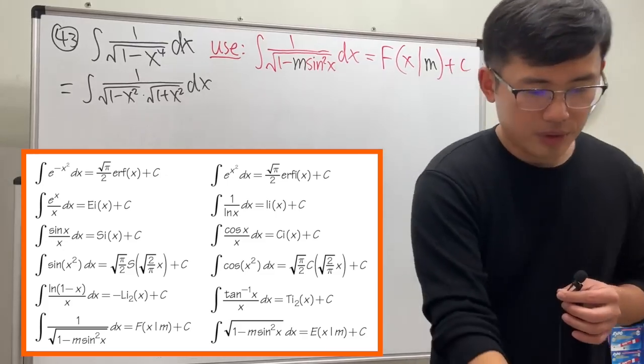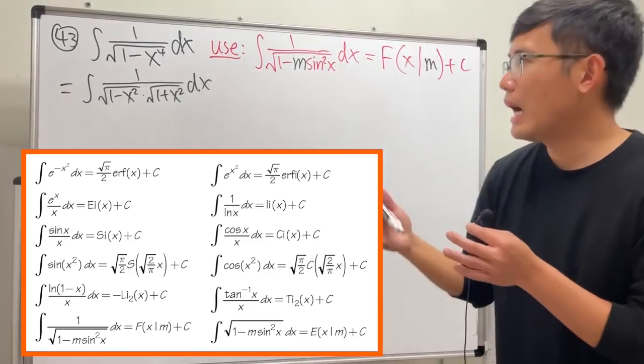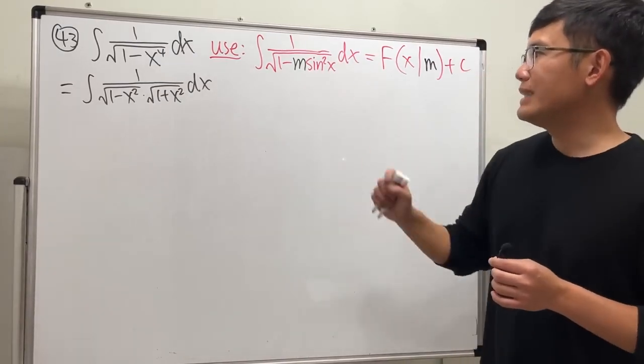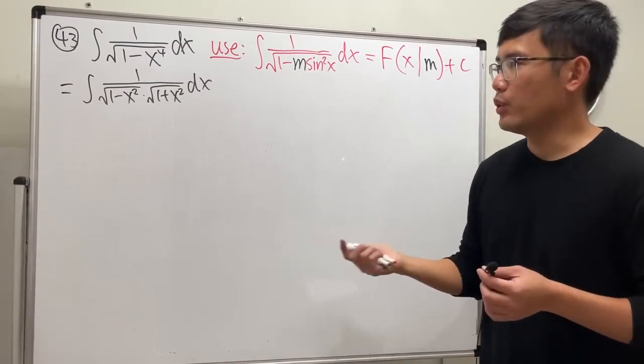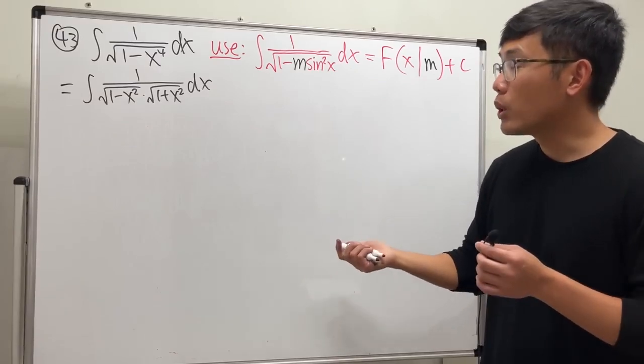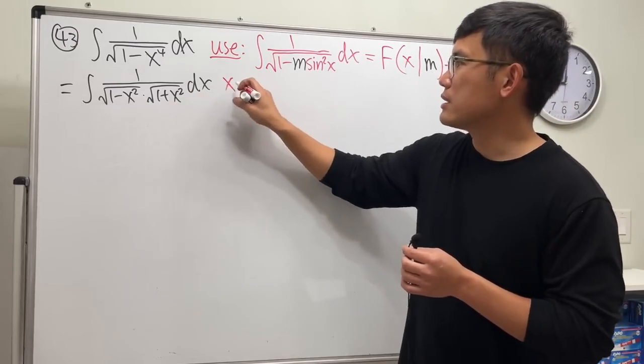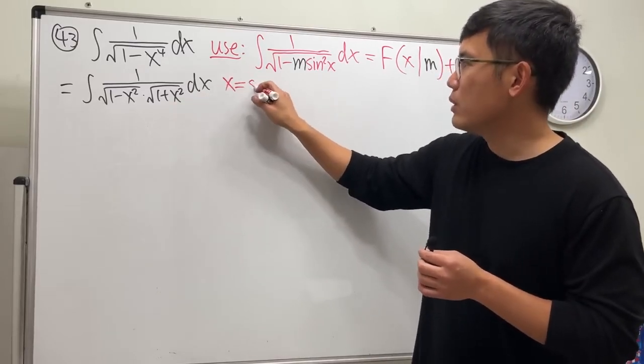So this is what we are going to be using for this integral. But how do we do it? In order for us to use that, we must have sine. We don't have sine yet, so what do we do? Let's produce sine. Look at this: I will take a substitution that x equals sine theta.